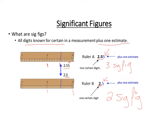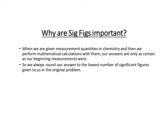For example, if I did some calculation like converting this measurement — say it's in inches and I'm converting it to centimeters — my answer will have three sig figs because that's what my original had. And down here my answer could only have two because that's what my original had. In chemistry, when we're given measurement quantities with a certain number of sig figs and perform calculations with them, our answer can only be as certain as our beginning measurements. So the general rule is: always round your answer to the lowest number of significant figures given in the original problem.